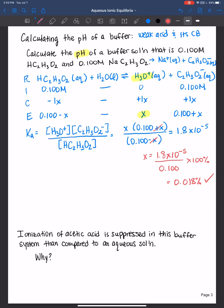So x is equal to 1.8 times 10 to the negative 5th. That means that the hydronium ion concentration at equilibrium is also equal to 1.8 times 10 to the negative 5th.